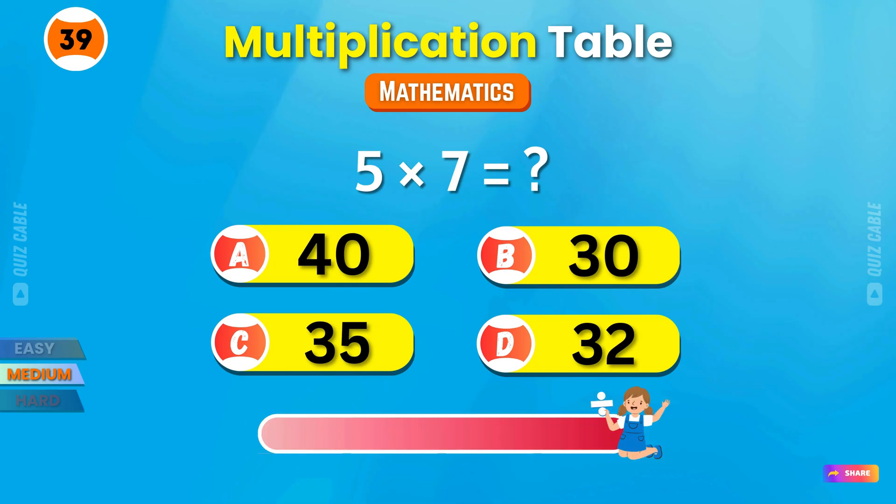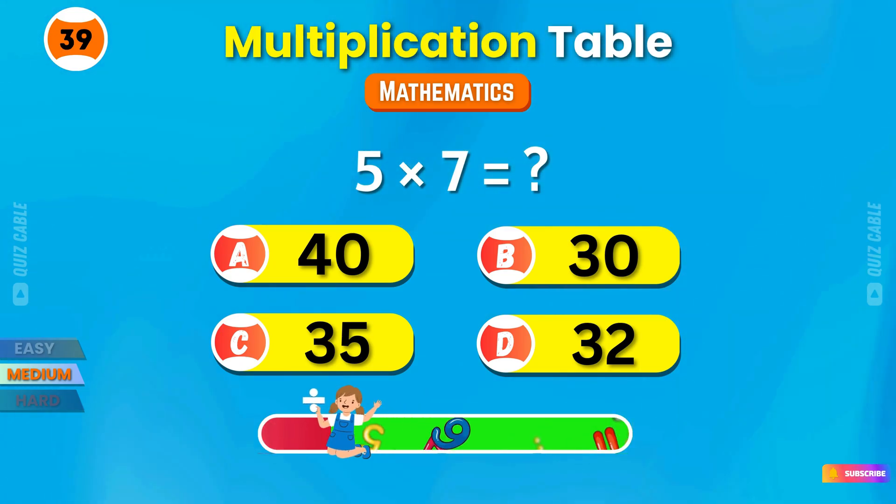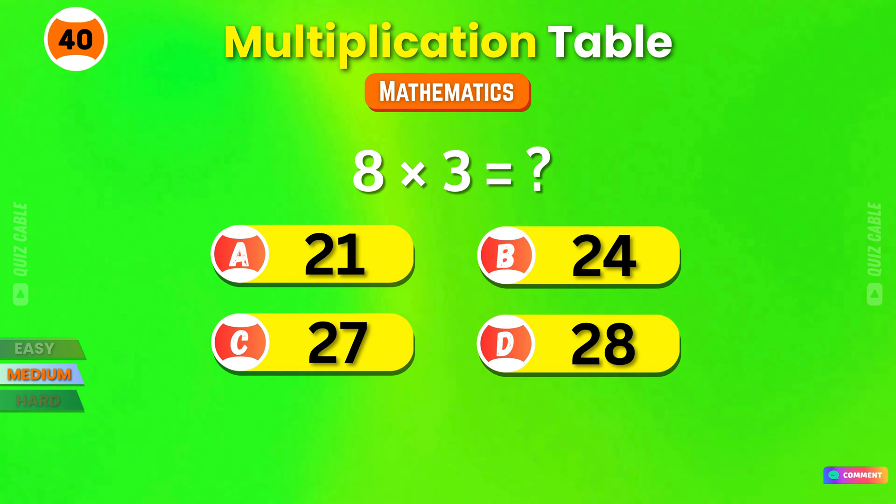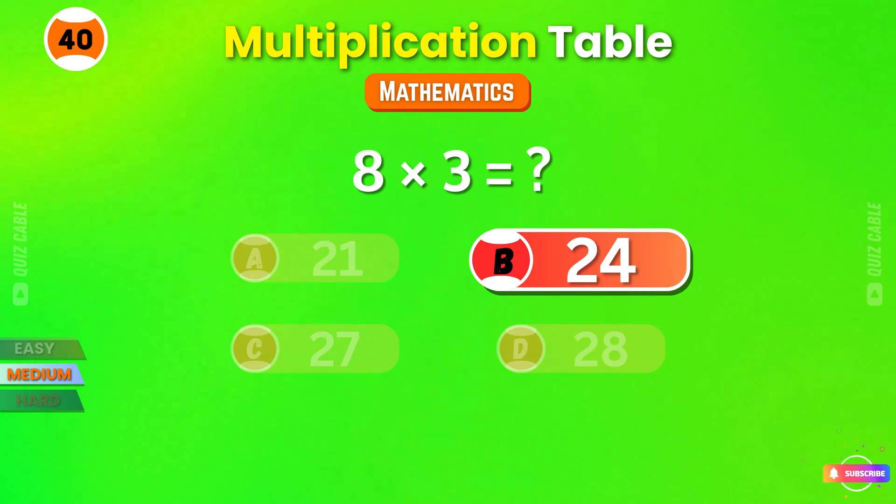5 times 7? 35! You're killing it! 8 times 3? 24! Perfect!